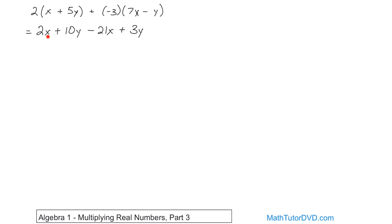So here we have 2x, and here you have negative 21x, but in both cases you have an x as your variable which matches. So that allows you to add or subtract the numbers. So in this case, you have...